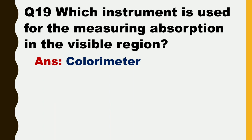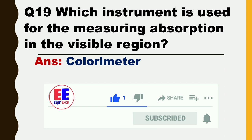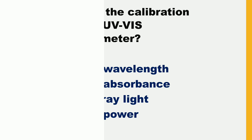Next question is: which instrument is used for measuring absorption in the visible region? The answer is colorimeter.